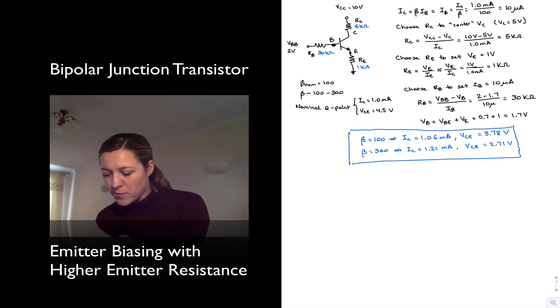And so you can see, in this case for the standard value of beta equals 100, our VCE is not as accurate, we could say. But notice that we've sacrificed accuracy for stability, in that between the two cases, beta equals 100 and 300, we have now the smallest variation between our IC and VCE values, our Q-point values.